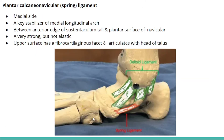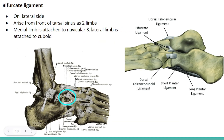The plantar calcaneonavicular ligament, or spring ligament, is located on the medial side and is a key stabilizer of the medial longitudinal arch. It runs between the anterior edge of the sustentaculum tali, a bony projection of the calcaneus, and the plantar surface of the navicular. It is a strong ligament with a fibrocartilaginous facet on its upper surface that articulates with the head of the talus.